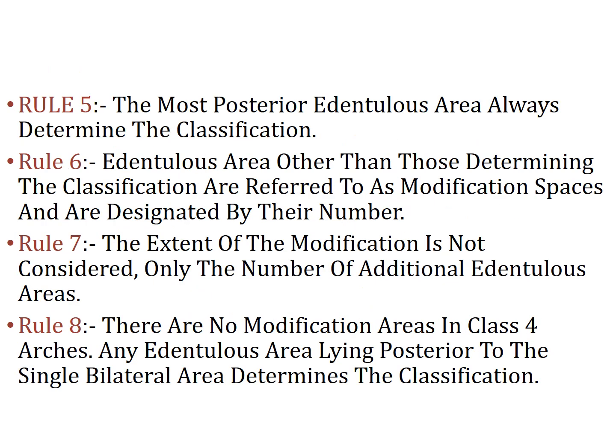Rule number 5: the most posterior edentulous area will always determine the classification. You may have multiple edentulous areas, but the most posterior one in the arch determines the class, and any other extra edentulous areas are called modification areas, designated by their number. Rule number 8: there are no modification areas in Class 4 because it crosses the midline and remains anterior to all the teeth.